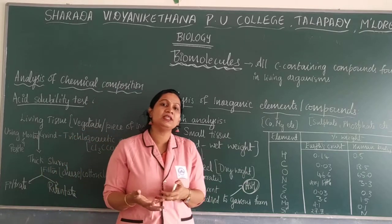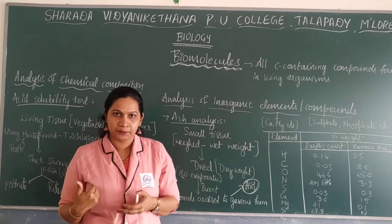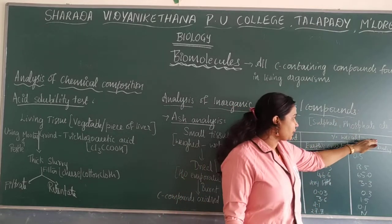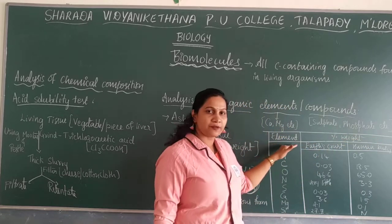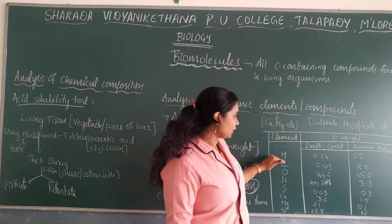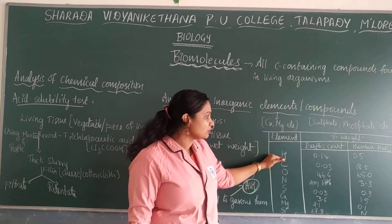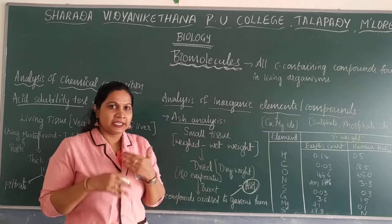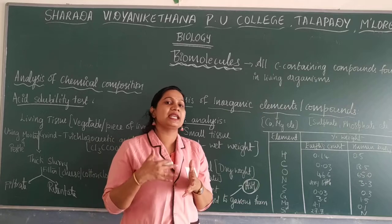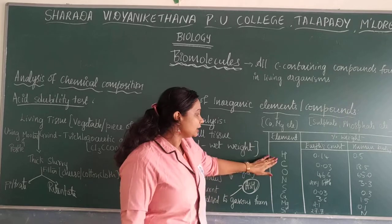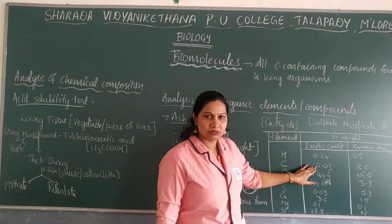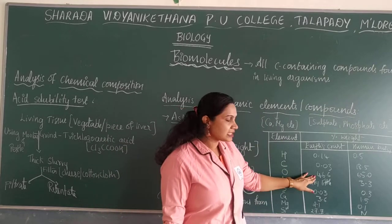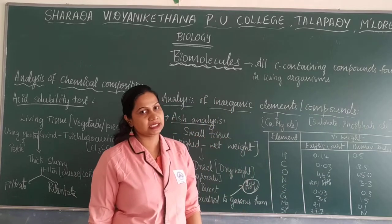But there is a difference. We can take the example of a human body compared to the earth's crust. Looking at percentage weight of certain elements: hydrogen is about 0.14% in the earth's crust and 0.5% in the human body. The percentage is slightly higher in living organisms. Carbon is about 0.03% in the earth's crust and 18.5% in the human body. Oxygen is 46.6% in the earth's crust and 65% in the human body.